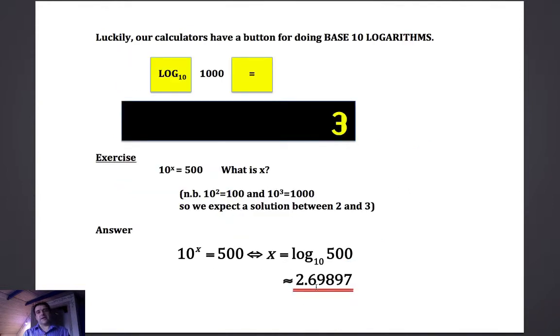As I said, luckily our calculators have a button for doing base 10 logarithms. If you find the log button on your calculator and you do log of 1000, you get the answer 3. So that is telling you that 3 is the power to which you have to raise 10 in order to get 1000.